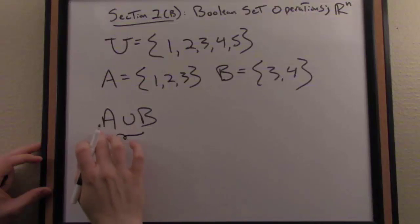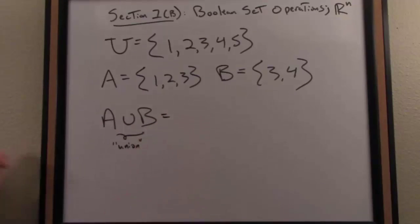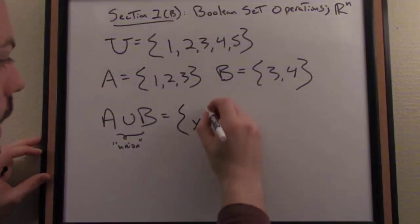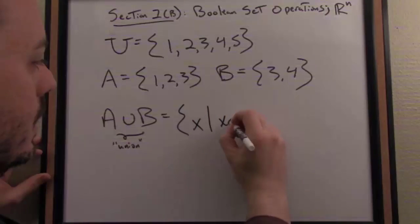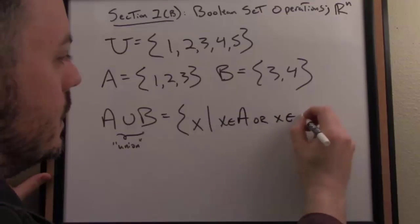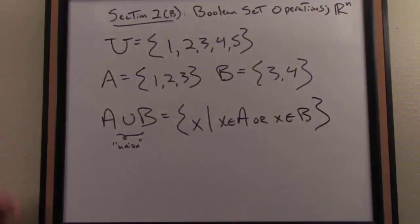And so we would read this A union B. And that symbol, the U, is read union, as I've indicated. The definition of the union of two sets is, using set builder notation, the set of all X such that X is an element of A or X is an element of B. There's the definition of the union of two sets.